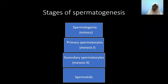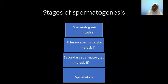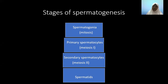These primary spermatocytes undergo meiosis 1 — the reduction division where the number of chromosomes is reduced to half. So the secondary spermatocytes produced will have only 23 chromosomes. The secondary spermatocytes then undergo meiosis 2, and each secondary spermatocyte produces two spermatids. The spermatids also have only half the number of chromosomes, that is 23. This is the significance of meiosis in spermatogenesis.